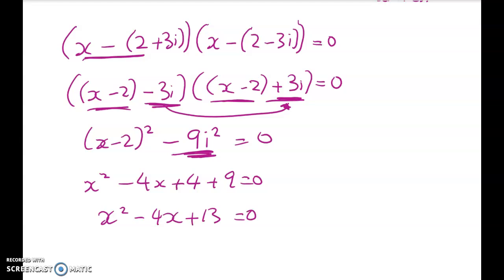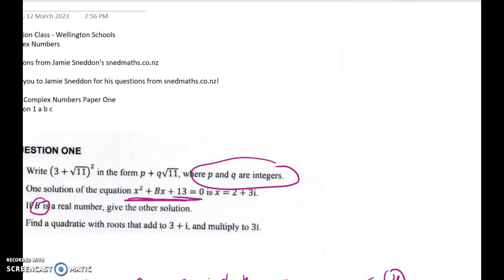So if we've been asked what b was, b is equal to -4. Remember the question didn't ask us what b was, that was just an extra bit.